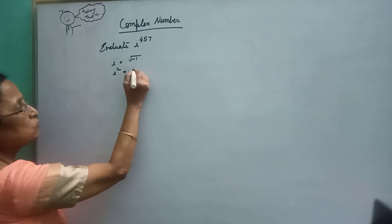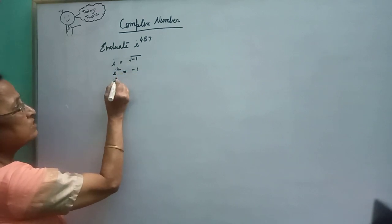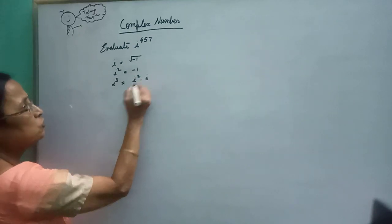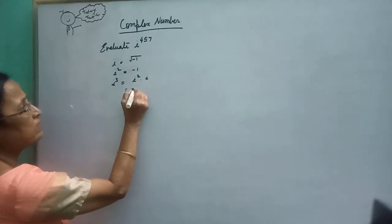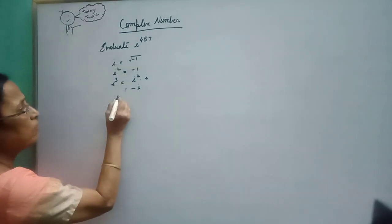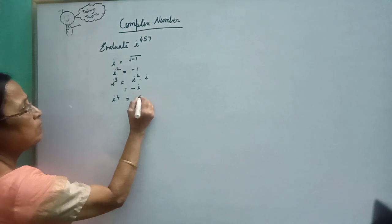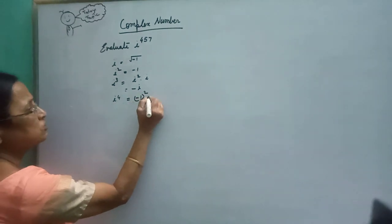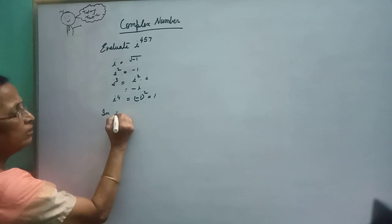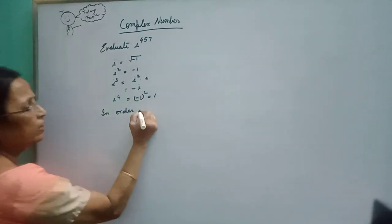i cube can be written as i squared into i, so this is minus 1, therefore i cubed is minus i. And i to the power 4 is equal to minus 1 whole square, so this is 1.